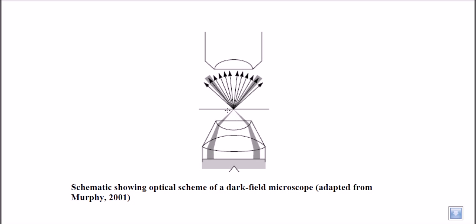We can also use dark field microscopy to observe live bacterial motion and live protozoal motion. We can observe flagella very well because they are very thin structures — in bright field microscopy too much light hampers the contrast needed to observe them. Dark field microscopy provides the platform to observe those kinds of structures, which is why it is used for these purposes.